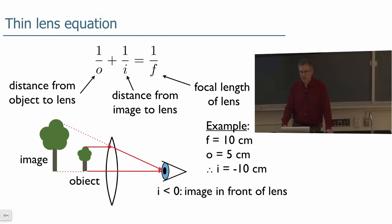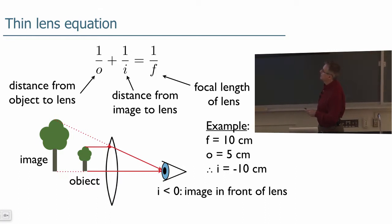I is the distance from the image to the lens, or from the lens to the image. And F is the focal length of the lens. We're going to use this equation quite a lot. So in the example where we made a magnifying glass out of our lens, we have, let's say, a focal length of 10 centimeters. The object is at 5 centimeters.